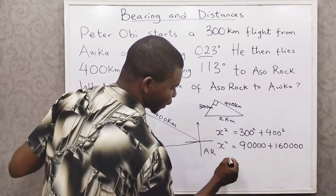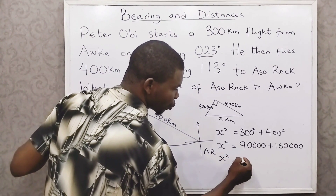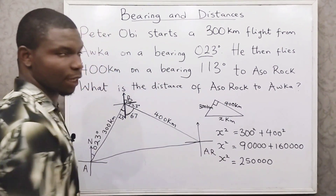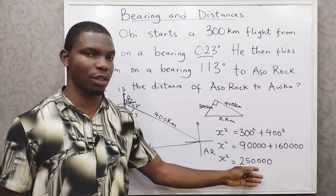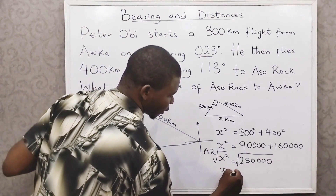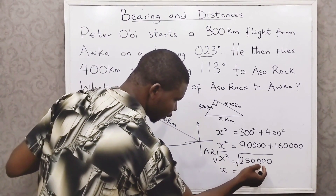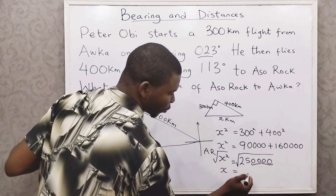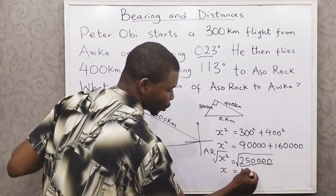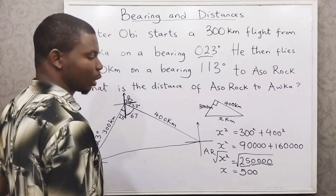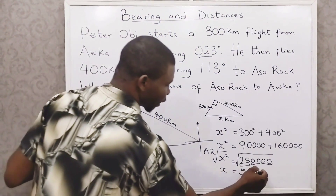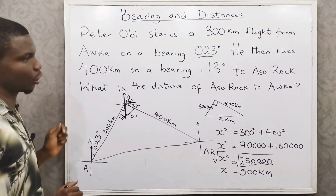So x squared equals 90,000 plus 160,000, which is 250,000. To get x, we find the square root of both sides. The square root of 250,000 — since we have the square root of 25 which is 5, and two pairs of zeros giving us two zeros — x equals 500 kilometers. That is the distance of Asurok to Oka.